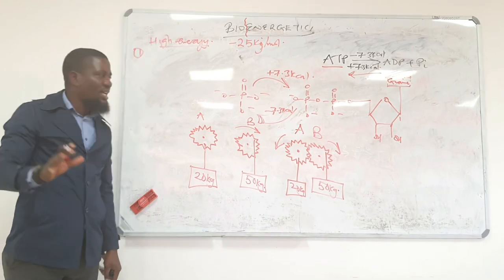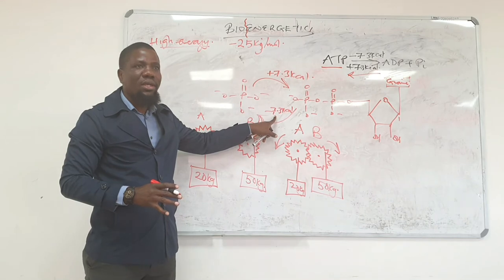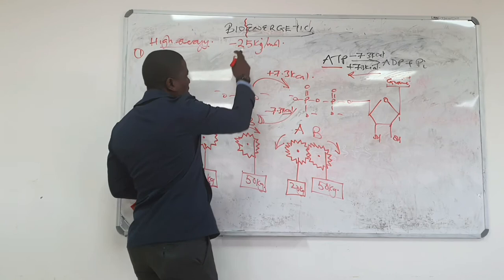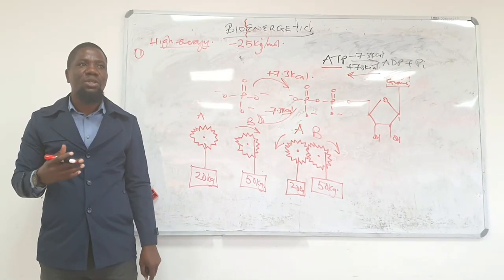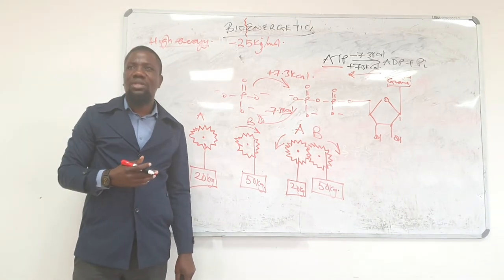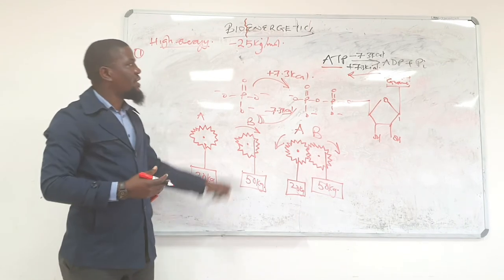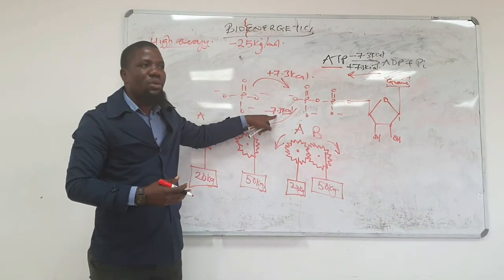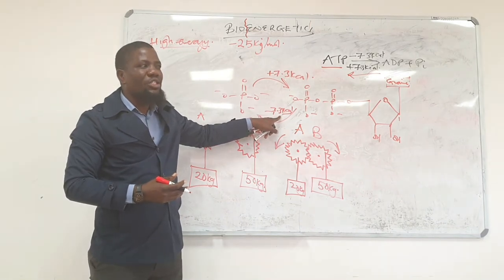Before you get scared and say hey, you said ATP is a high energy molecule but it has minus 7.3, check the units. This is kilocalories, this is kilojoules per mole. If you have kilojoules to convert them to kilocalories, you divide by 4.128 or something. ATP which has 7.3 kilocalories multiplied by 4.128 will be somewhere minus 31 kilojoules. Therefore, this is a high energy molecule.